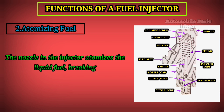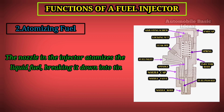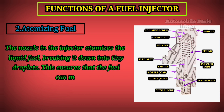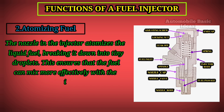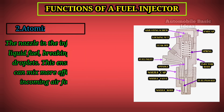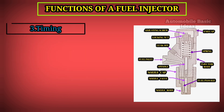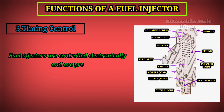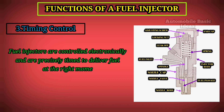2. Atomizing Fuel. The nozzle in the injector atomizes the liquid fuel, breaking it down into tiny droplets. This ensures that the fuel can mix more effectively with the incoming air for combustion. 3. Timing Control. Fuel injectors are controlled electronically and are precisely timed to deliver fuel at the right moment.